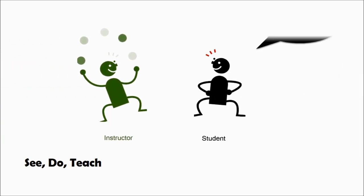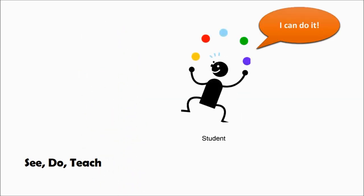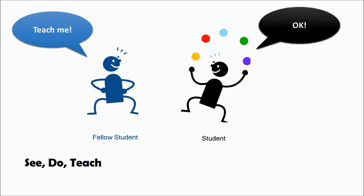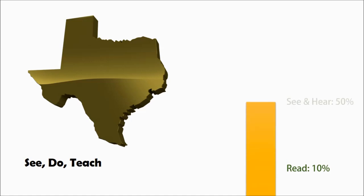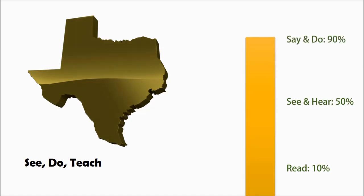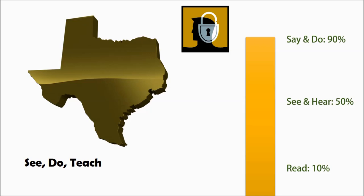One of the best ways to utilize the 70-30 rule is the See, Do, Teach model. During class, let students see how a certain skill or concept works, then give them a chance to do it all by themselves. Finally, have the student teach someone else what they just learned. A study by the University of Texas found that people only remember 10% of what they read, and 50% of what they see and hear, yet people can remember 90% of what they say and do. By adding this extra step of students teaching each other, they are locking in that information with 90% retention.